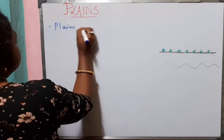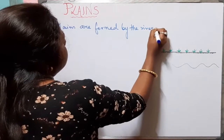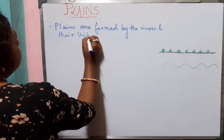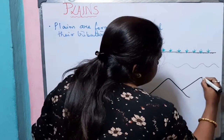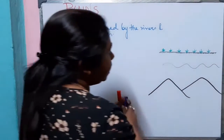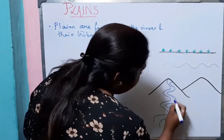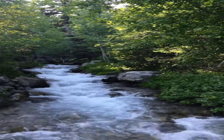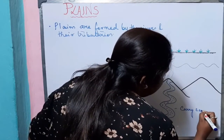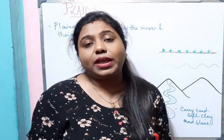Now let us know how plains are formed. Plains are formed by the rivers and their tributaries. Many rivers rise in the mountains and when these rivers come down into the valleys, they erode the mountains and along their course they carry sand, silt, clay, and stones.